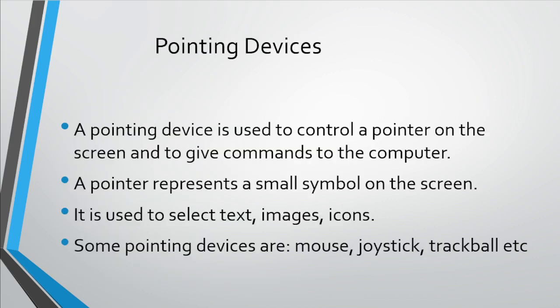Next are pointing devices. An input device used to control a pointer on the screen is called a pointing device. Pointing devices are those devices that control the cursor or pointer on the screen. A pointer is a small symbol that appears on the screen. By using a pointer, we select text, images, and icons. Pointers are used in graphical user interface.